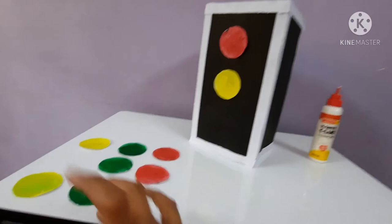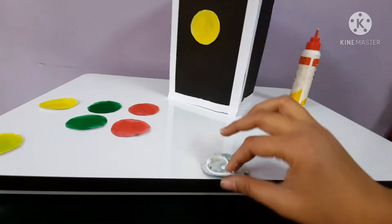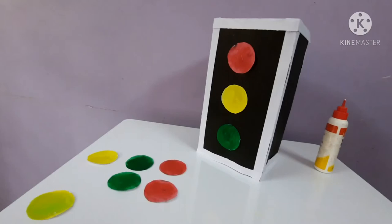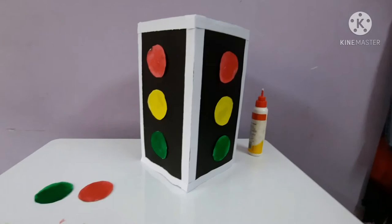Now the green one. Take the green piece of paper, again apply Fevicol and then stick the green light. So like this, you have to stick the lights on all four sides of the box.